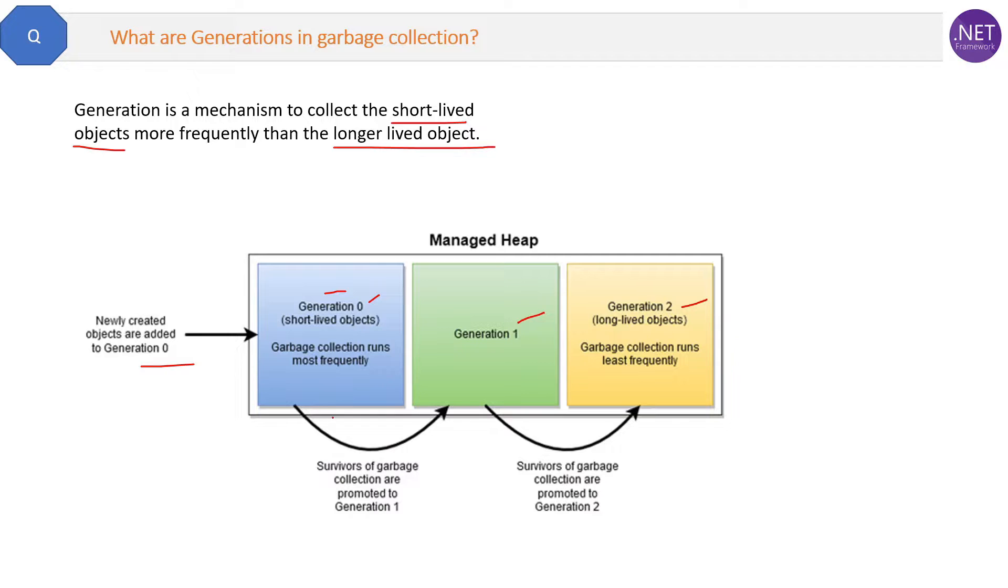If it is still in use, then the garbage collector will move this object from Generation 0 to Generation 1 and check whether the objects present there are currently used or not. So again, it will do the same thing with Generation 1 objects also.